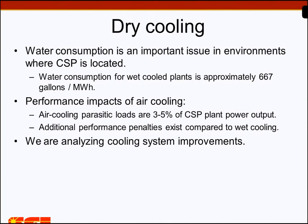Focusing on concentrating solar power and dry cooling: water consumption is certainly an important issue where CSP is located in arid desert areas with high direct irradiance resources. A benchmark number — the water footprint for electricity consumption overall is said to be about half a gallon per kilowatt hour, or 500 gallons per megawatt hour. For wet-cooled power plants it's a bit higher — you can derive this from the enthalpy of vaporization of water — and it's a big number.